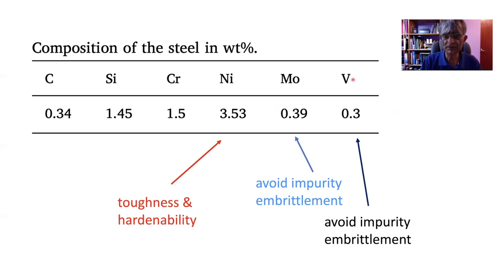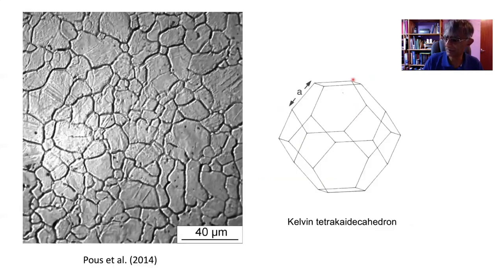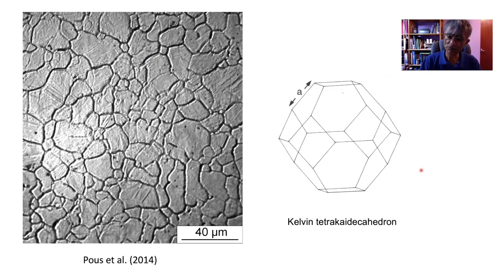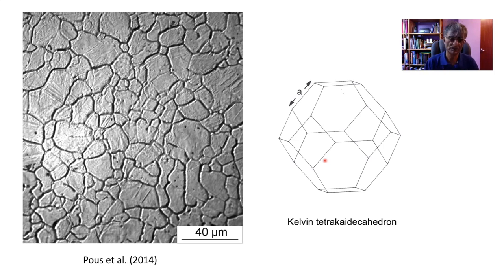We also add vanadium to control the austenite grain size during the deformation process. An ordinary grain structure identified by thermal grooving — where you polish the sample, austenitize it, and surface tension balancing creates grooves — can be idealized in three dimensions as a Kelvin object consisting of hexagons and squares. This is the closest approximation to balancing of interfacial tensions at grain boundary junctions, though a perfect equilibrium with 120-degree angles is impossible in a three-dimensional grain structure.